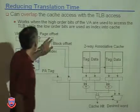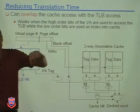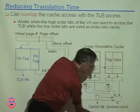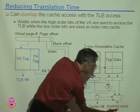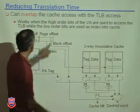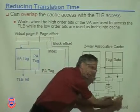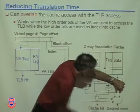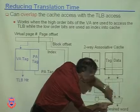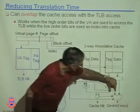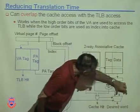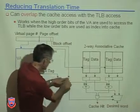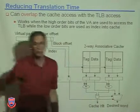The block offset is used when you have a multi-word block — if the block size is more than one word. Once you identify the cache entry, you need to select which word within the block. So you choose which cache entry matched using the hit signal, and then choose the desired word from the block using the block offset bits. It's essentially an 8-to-1 mux with the controls split differently.